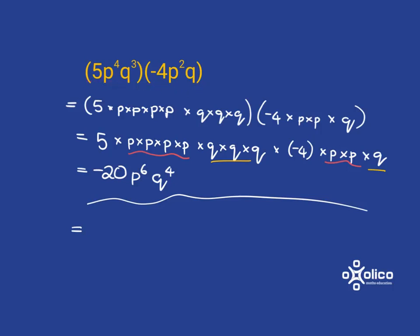All of this is just multiplied together. So I've got 5 multiplied by negative 4, and that is negative 20. And then I have P to the 4 multiplied by P squared, and so that is going to be P to the 4 plus 2. And I have Q cubed multiplied by Q to the power of 1, so that's going to be Q to the power of 3 plus 1. And so I've got minus 20 P to the 6 Q to the 4.